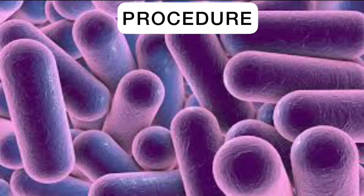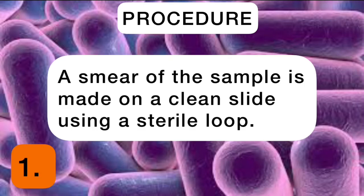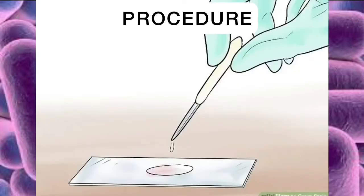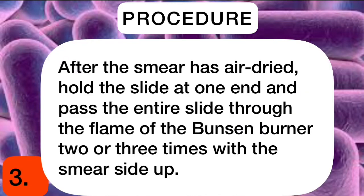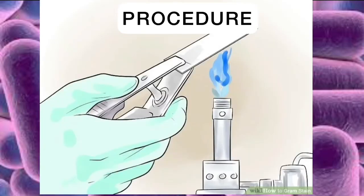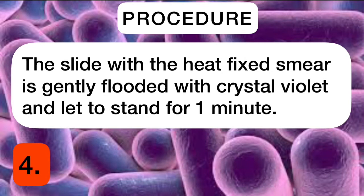The procedure for carrying out the gram stain technique is as follows. A smear of the sample is made on a clean slide using a sterile loop. The smear is then allowed to air dry. After the smear has air dried, hold the slide at one end and pass the entire slide through the flame of a Bunsen burner two or three times with the smear side up. The slide with the heat-fixed smear is then gently flooded with crystal violet and let to stand for one minute.